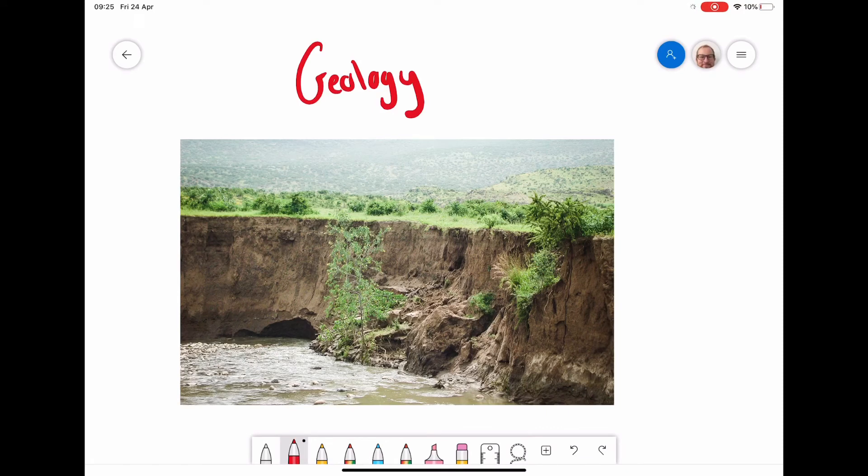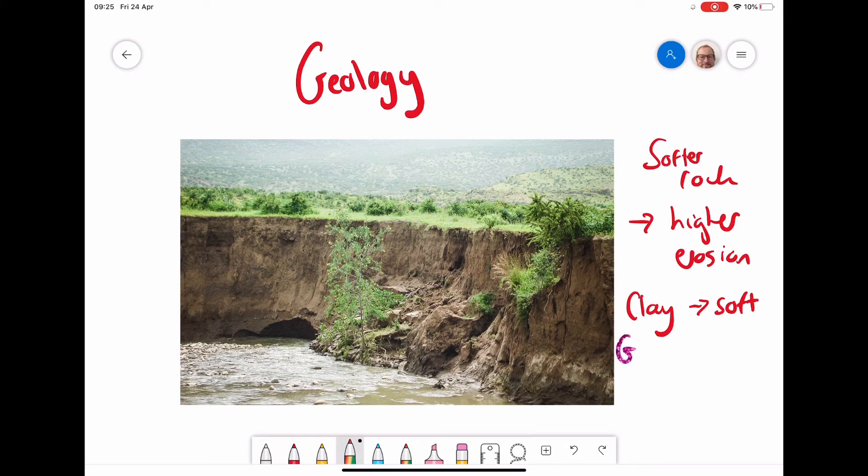The next factor to consider that affects erosion and transportation and deposition rates would be the geology. Geology is the structure of the rock. As we can see here, there's been quite a lot of erosion on the side of this river. It's a very steep river cliff. The reason why that is, is to do with the geology. This is a clay bank. Clay is softer rock and it's more susceptible to erosion. So if we have softer rock, then we have higher erosion. Clay is an example of something that is very soft and susceptible to water. But if we had something like granite, it's very hard and therefore less likely to erode. So if we have softer rocks on the side or on the base of the river, we're going to get high erosion rates and therefore more of that material is going to be transported in the bed load.